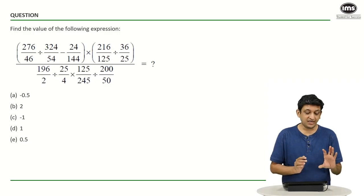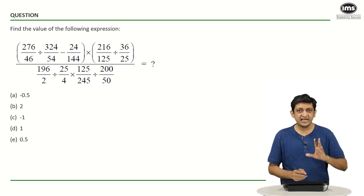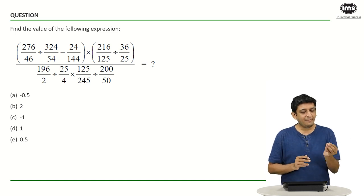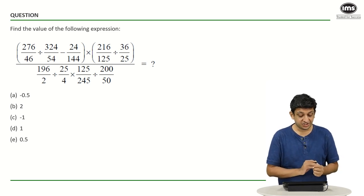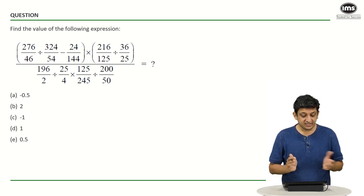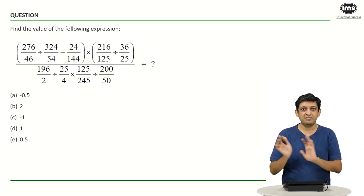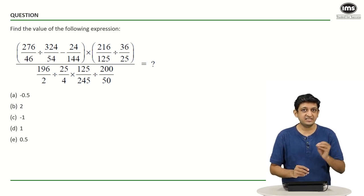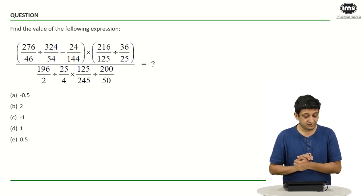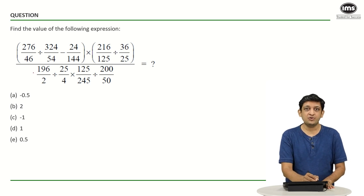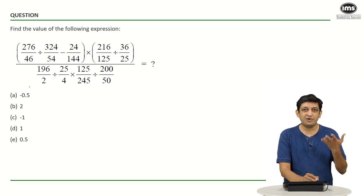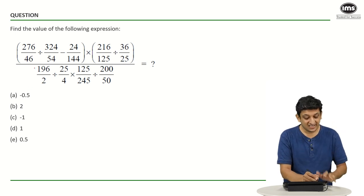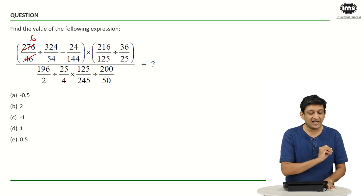So in this question, we have 276 divided by 46, divided by 324 by 54. You just have to flip the fraction, minus 24 by 144 — that part is inconsequential — multiplied by another bracket with a large division and multiplication term. So we look at 276 by 46 and 324 by 54. Now, 46 fives are 230, and 230 plus 46 is 276, so 46 sixes are 276, giving us 6.